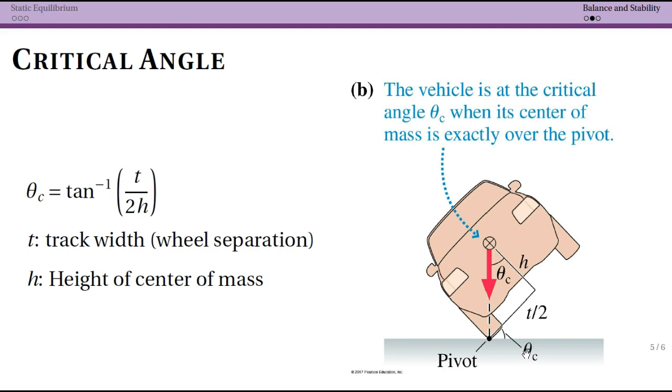There's a critical angle where it's technically balanced but only until, for instance, the wind blows. And in that case what we see here is that's when the center of mass of the vehicle is right above the pivot point. And for this we can create an equation for that critical angle.